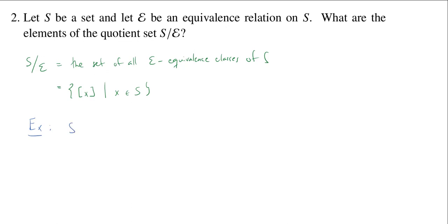So let's say our S is going to be the set 1, 2, 3, 4, 5, 6, 7, 8. And I'm going to define an equivalence relation. So E is going to be a subset of S cross S.